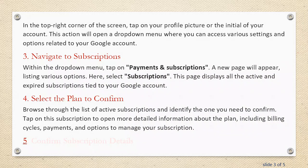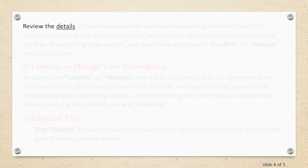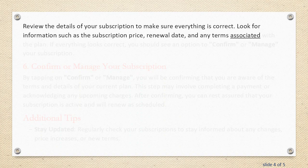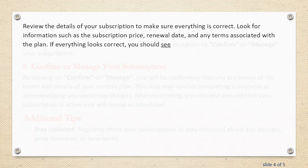Step 5: Confirm Subscription Details. Review the details of your subscription to make sure everything is correct. Look for information such as the subscription price, renewal date, and any terms associated with the plan. If everything looks correct, you should see an option to confirm or manage your subscription.